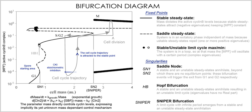Molecular set theory (MST) is a mathematical formulation of the wide-sense chemical kinetics of biomolecular reactions in terms of sets of molecules and their chemical transformations, represented by set-theoretical mappings between molecular sets. It was introduced by Anthony Bartholomay, and its applications were developed in mathematical biology and especially in mathematical medicine. In a more general sense, MST is the theory of molecular categories defined as categories of molecular sets and their chemical transformations. The theory has also contributed to biostatistics and the formulation of clinical biochemistry problems involving pathological and biochemical changes of interest to physiology, clinical biochemistry and medicine.